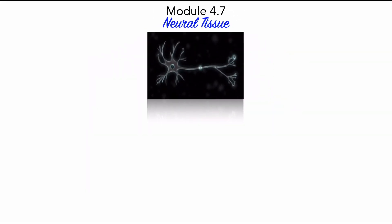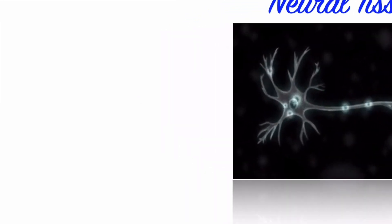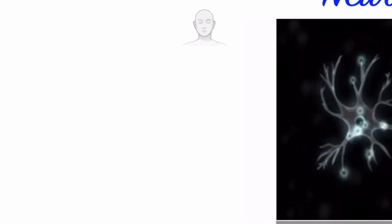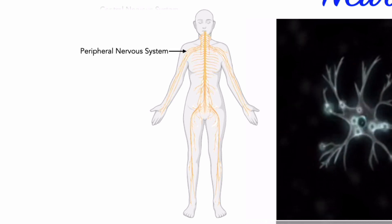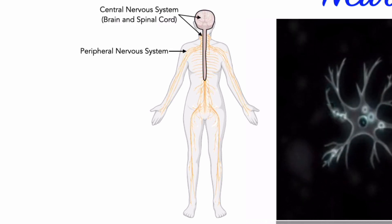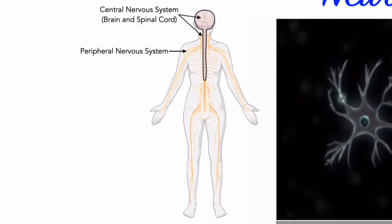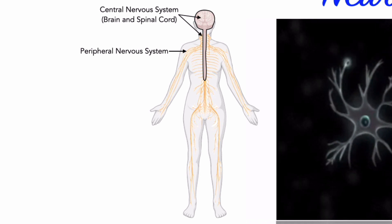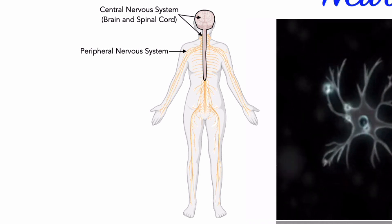Neural tissue, also known as nervous tissue or nerve tissue, is specialized for transmitting or propagating electrical impulses from one region of the body to another. The vast majority, almost 90% of neural tissue, is located in the brain and spinal cord, which collectively form the central nervous system and act as the control centers for the nervous system.